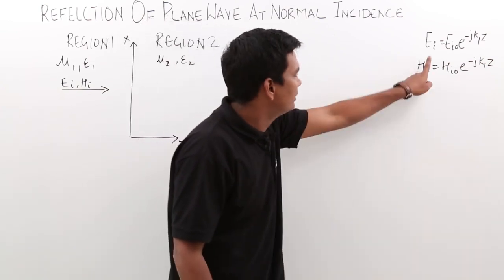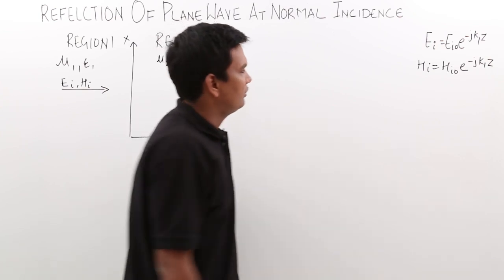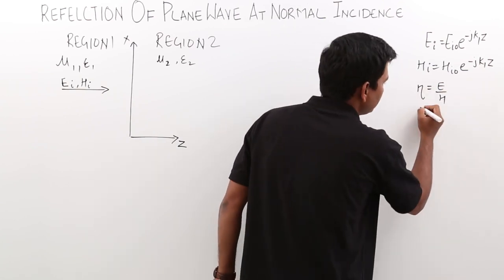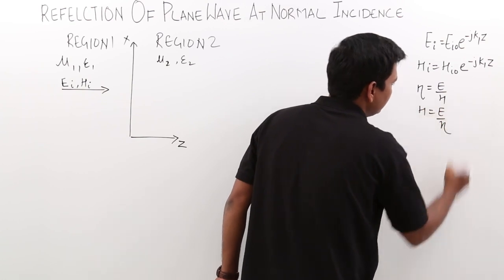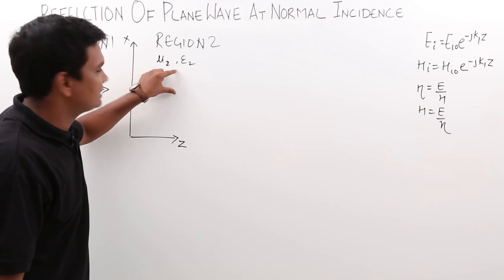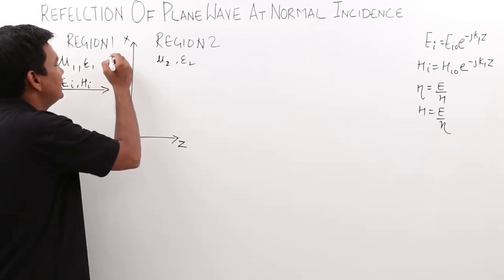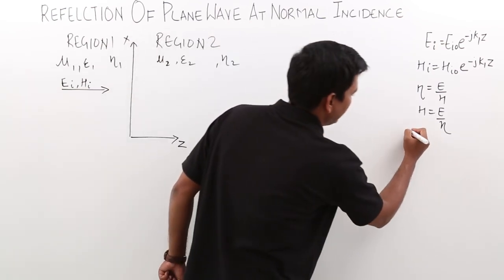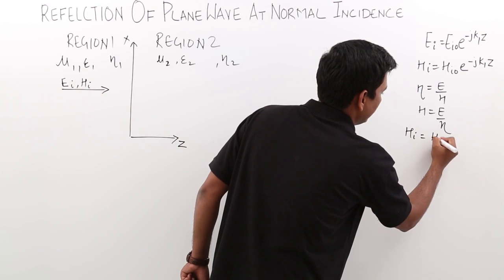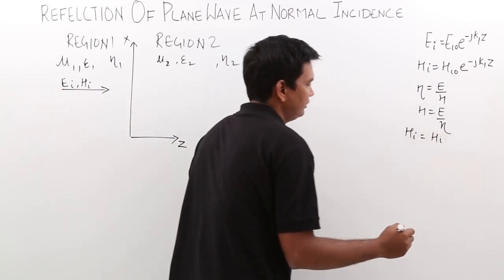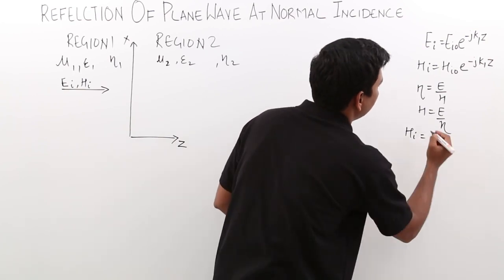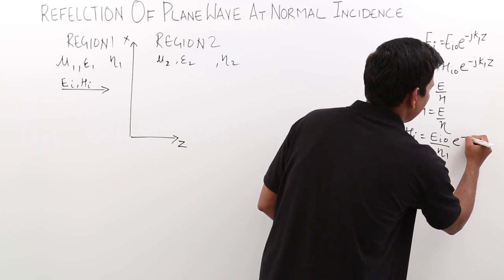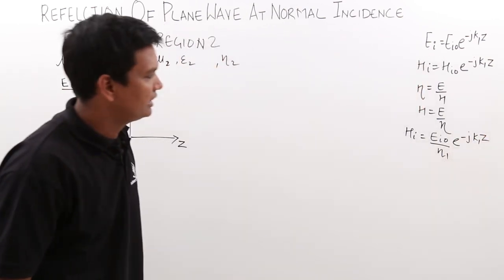If we want to write HI in terms of EI, we know that eta equals E divided by H, so H equals E divided by eta. For medium 1 the intrinsic impedance is eta1, and for medium 2 it is eta2. Therefore HI equals EIO divided by eta1, times e to the power minus j k1 z.